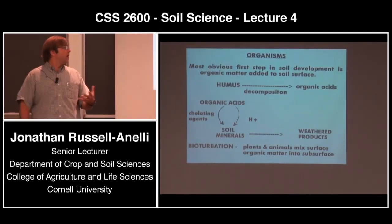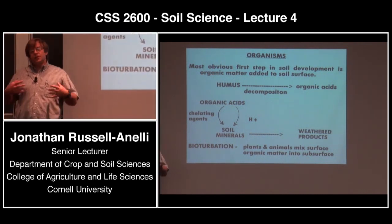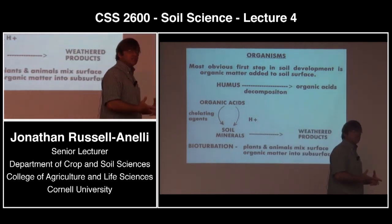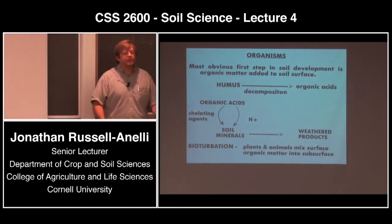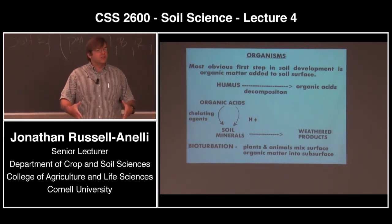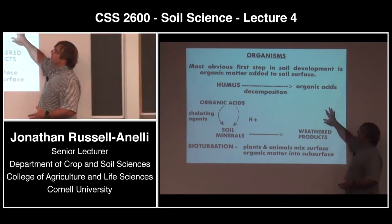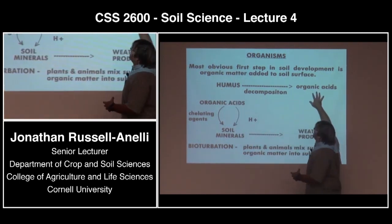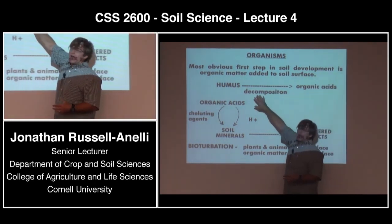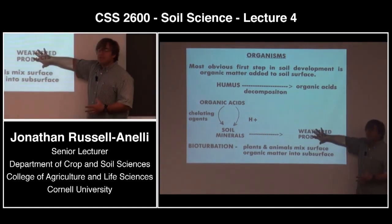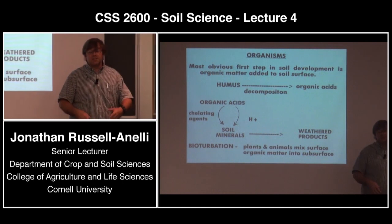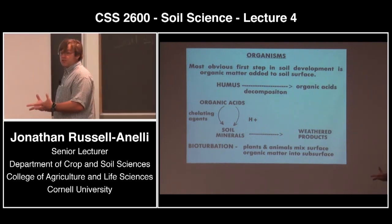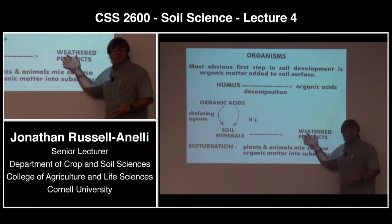Let's start talking about organisms. The accumulation of organic matter is perhaps the most obvious first step of soil genesis — the first thing you really see. When you start with a pile of parent material, the first change is that organic matter accumulation. Basically what we're looking at is humus — organic matter — being decomposed. That decomposition produces organic acids as well as byproducts of the organic material. These organic acids can react with soil minerals and produce weathered products. The first thing we really see is the accumulation of organic matter, darker colors. That material is decomposed, produces acids which react with minerals, and we start seeing soil genesis.